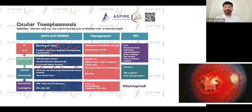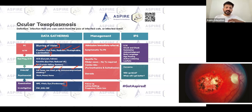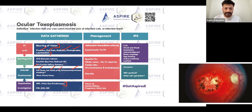This scenario might come as a station with a fundoscopy mannequin as well. When you perform fundoscopy, you're going to find findings consistent with ocular toxoplasmosis. The main symptom is blurring of vision, and the patient may also have floaters, eye pain, redness, and photophobia. Make sure you rule out sinister red flags.